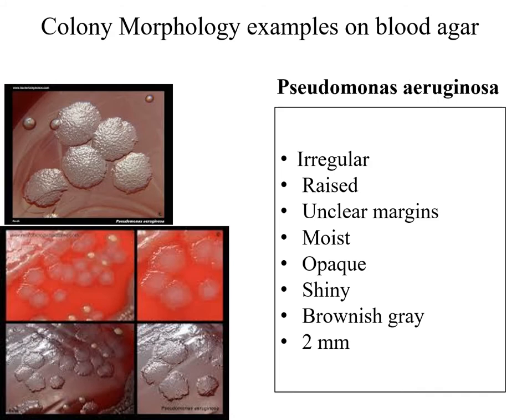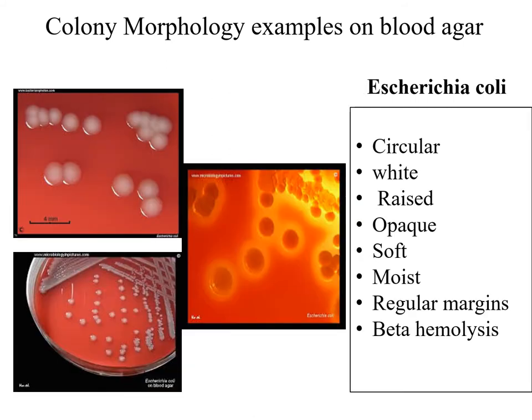In the next slides, we show examples of colony morphology on blood agar. Here is Pseudomonas aeruginosa: the colonies are characterized by being irregular, raised, and having unclear margins. They are moist, opaque, shiny, and brownish-grayish in color. The size of the colonies is around 2 mm in diameter.